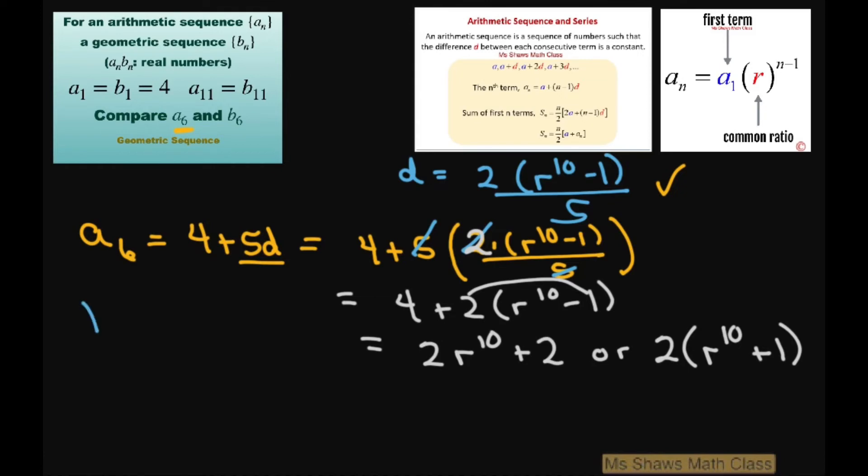Now let's look at b_6. That's 4 times r to the power of 5, using this formula again.